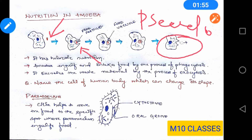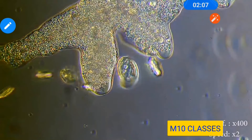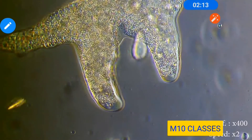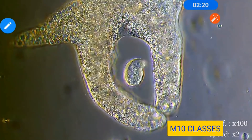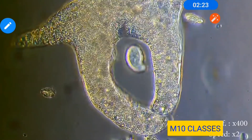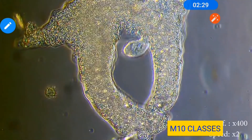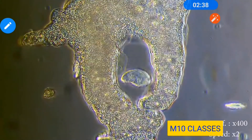Now let us watch a video for the formation of pseudopodia by amoeba. You can see here the food particle is coming near amoeba and it takes out a projection from its body which forms pseudopodia, covers the food particle, and gradually forms the food vacuole. It has already engulfed a paramecium and will digest it inside the cytoplasm of amoeba.